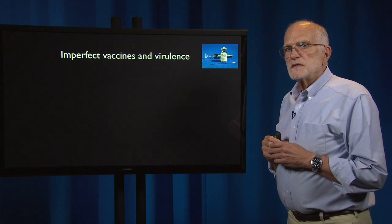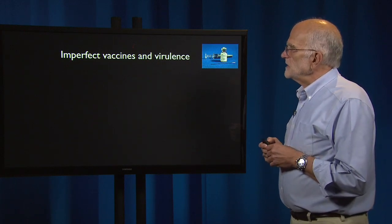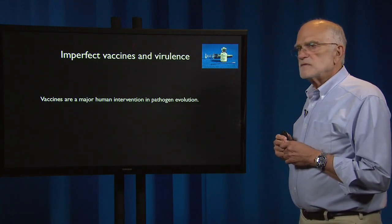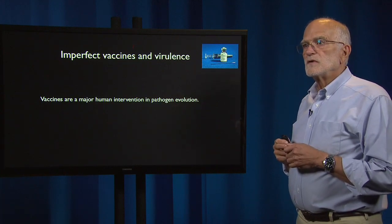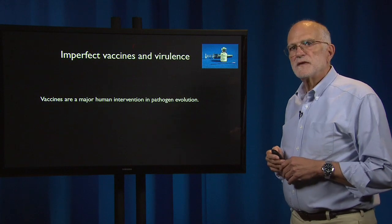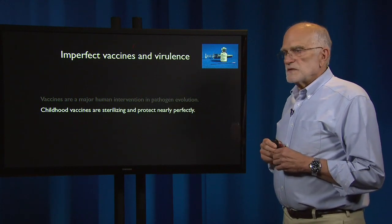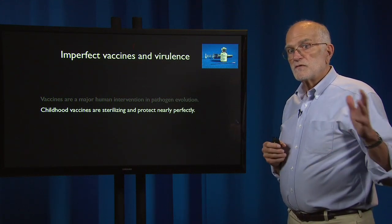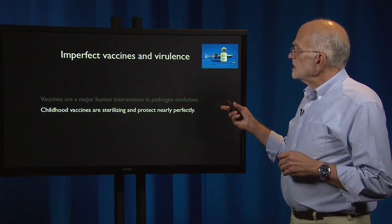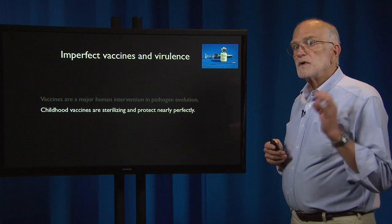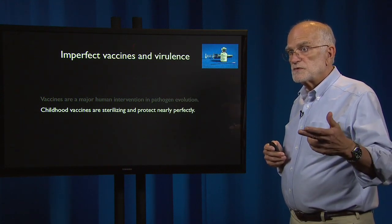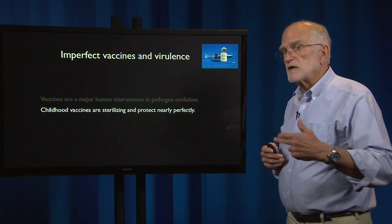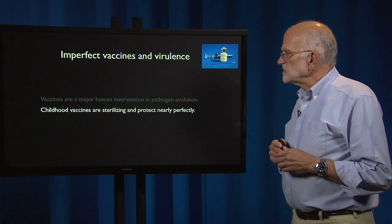Another important issue with virulence is raised by imperfect vaccines. Vaccines are a major human intervention in pathogen evolution — one of the biggest, most challenging new developments that pathogens have ever seen. Childhood vaccines, a major component of the reduction in infant mortality over the last hundred years, are sterilizing and protect nearly perfectly. Once vaccinated and a response is produced, the person is likely disease-resistant for life, though boosters are needed in some cases.